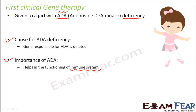ADA deficiency is something which can be extremely deadly, so we need to find ways to treat it. The treatment is by replacing the gene — having a gene responsible for production of ADA. Before discussing gene therapy, let us look at other treatment approaches and understand why gene therapy is so important.